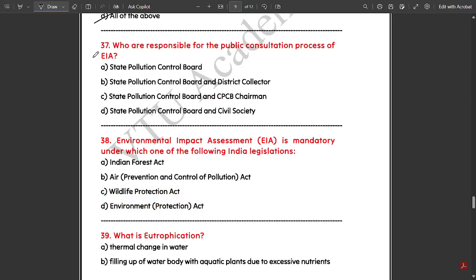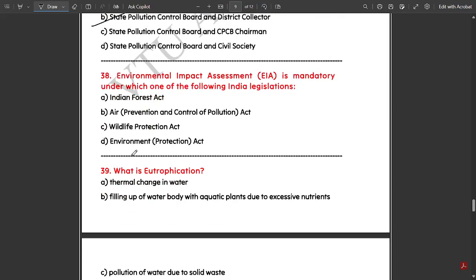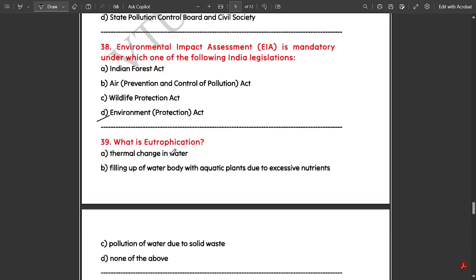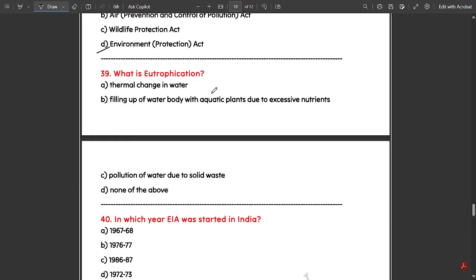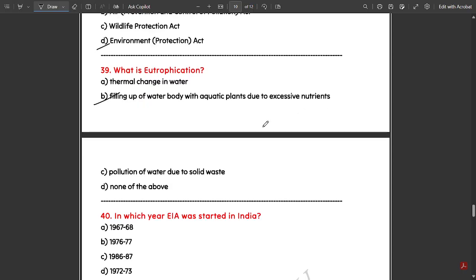Who are responsible for the public consultation process of EIA? State Pollution Control Board and District Collector. Environmental Impact Assessment (EIA) is mandatory under which India legislation? The answer is Environmental Protection Act. What is eutrophication? Eutrophication is the filling up of water body with aquatic plants due to excessive nutrients.